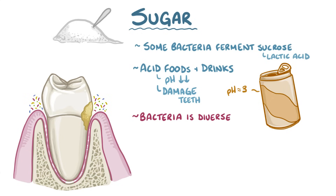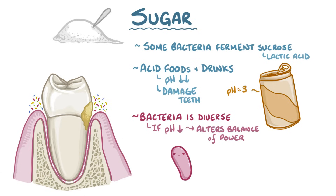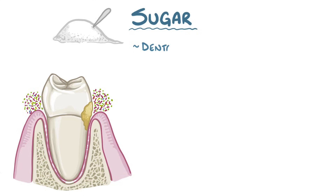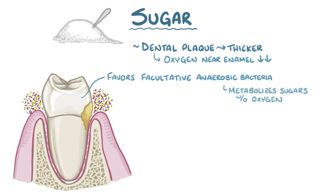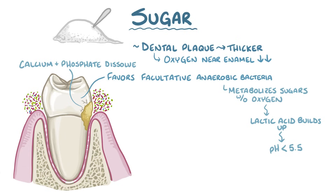The bacterial population in the mouth is diverse, and if the pH in the mouth starts to decrease, it alters the balance of power. Bacteria that thrive in a low pH, like mutans streptococci and lactobacillus, start to dominate. As dental plaque grows thicker, the amount of oxygen near the enamel surface starts to fall. That makes the environment on the enamel surface favorable for facultative anaerobic bacteria, which can metabolize sugars with and without oxygen present. If sucrose is metabolized anaerobically, lactic acid starts to build up, and it can quickly lower the pH on the enamel surface to below 5.5. Once the environment becomes that acidic, calcium and phosphate in the enamel start to dissolve into the fluid-filled diffusion channels between the enamel crystals, and that starts the process of demineralization.